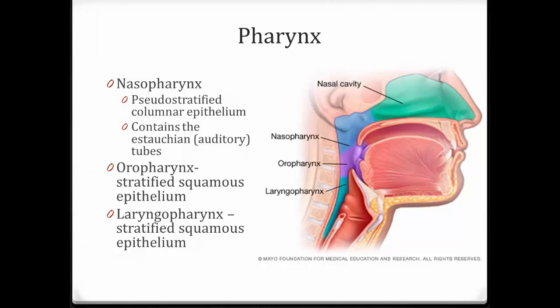The next structure moving down is the pharynx, familiar from the digestive system. The pharynx is divided into three components. The nasopharynx runs from the nasal cavity to the back of the throat around the uvula; it has pseudostratified columnar epithelium because it's still trapping material from the air, and it contains the connection to the middle ear — the Eustachian or auditory tube. The oropharynx has stratified squamous epithelium to handle friction from swallowed food. The laryngopharynx also has stratified squamous epithelium for the same protective reason.